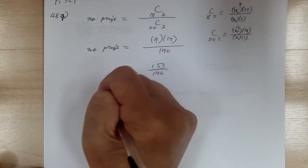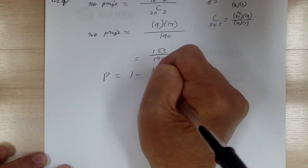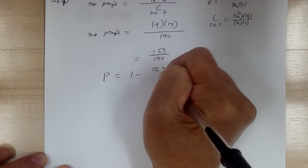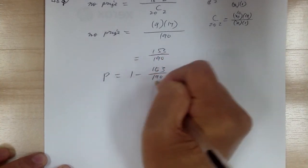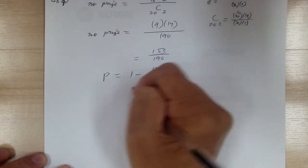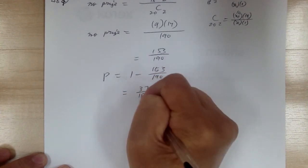So the probability you're looking for would be 1 minus 153 over 190, and so this equals 37 over 190.